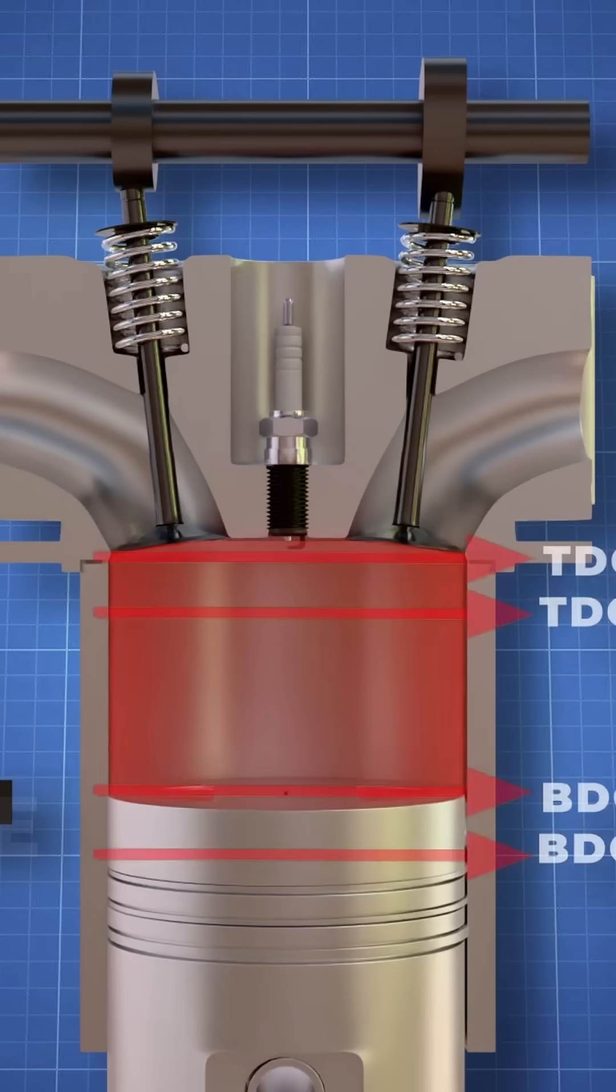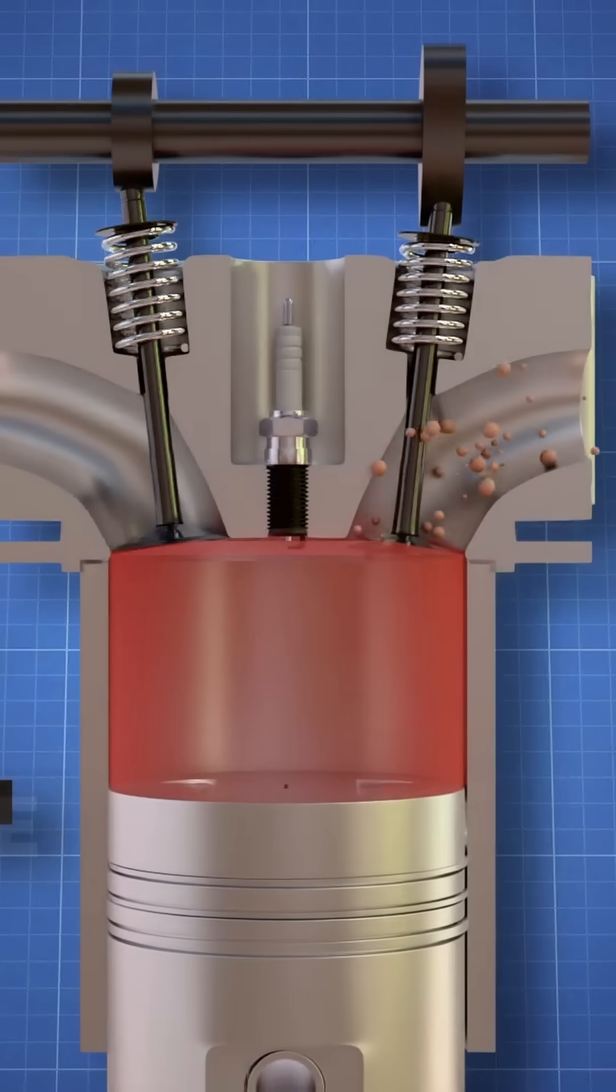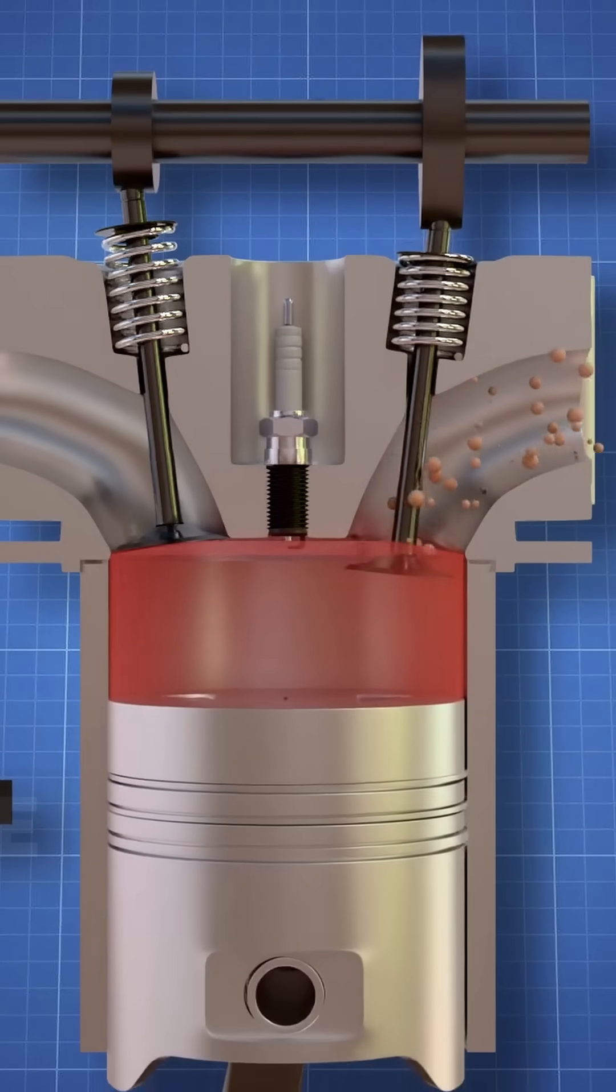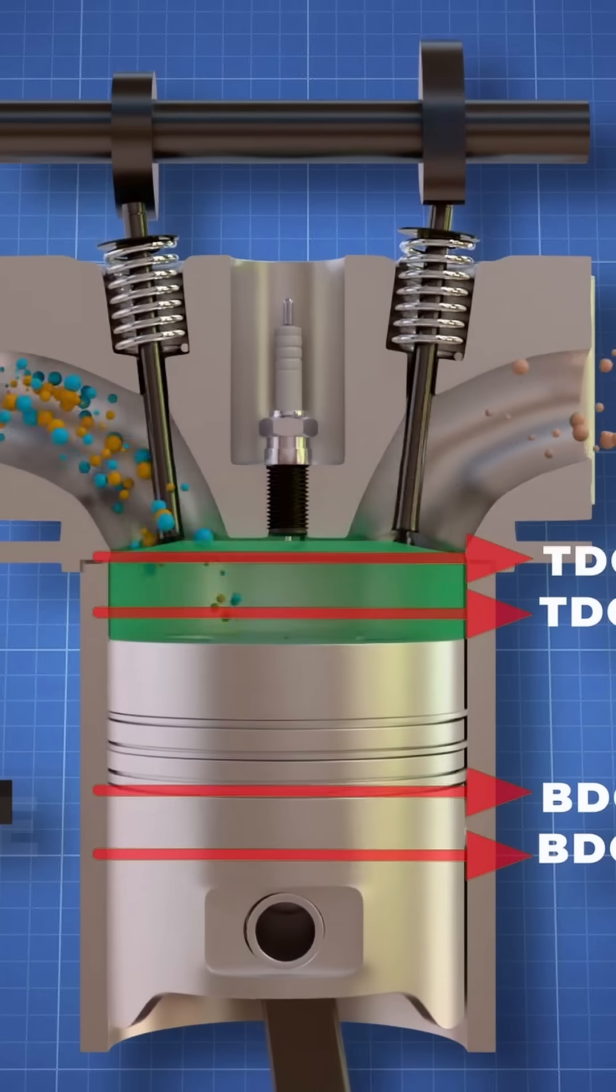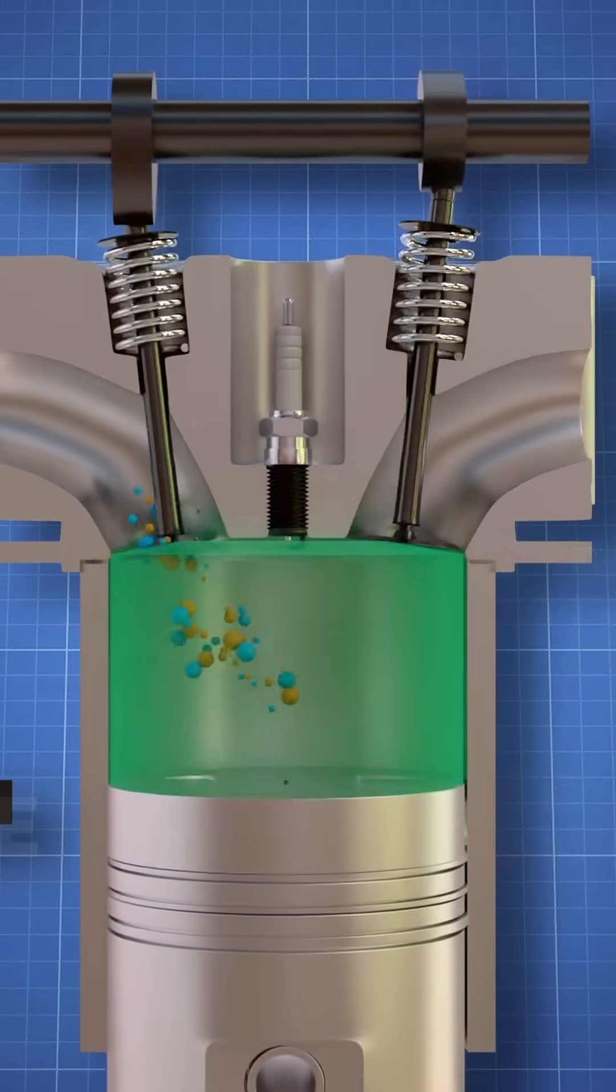As the piston moves down, the exhaust valve opens to expel all the burnt gases. As it reaches the BDC, the exhaust valve closes and the intake valve opens to start the cycle again.